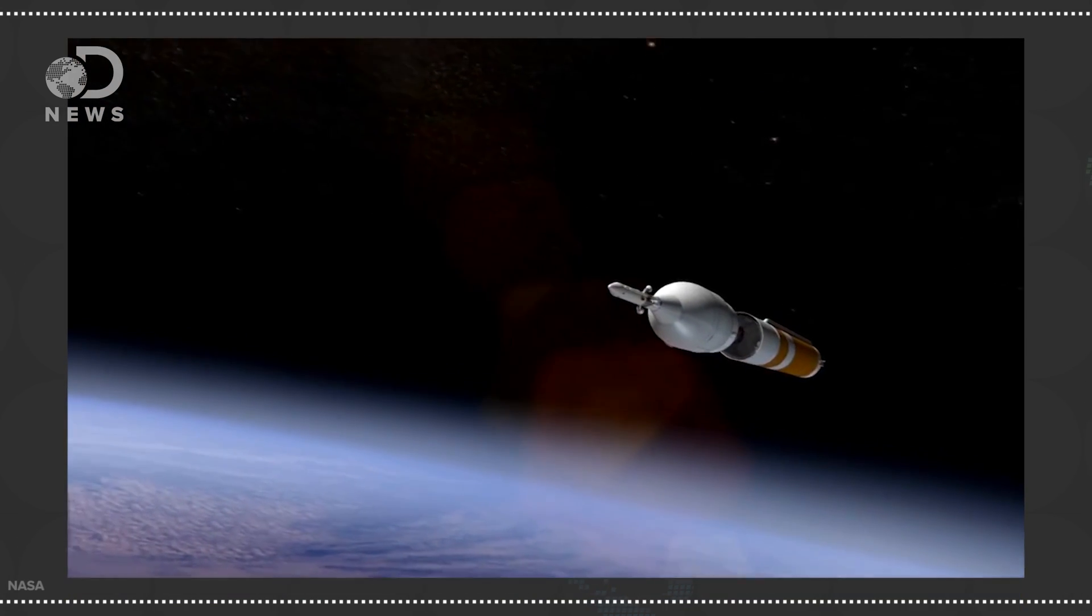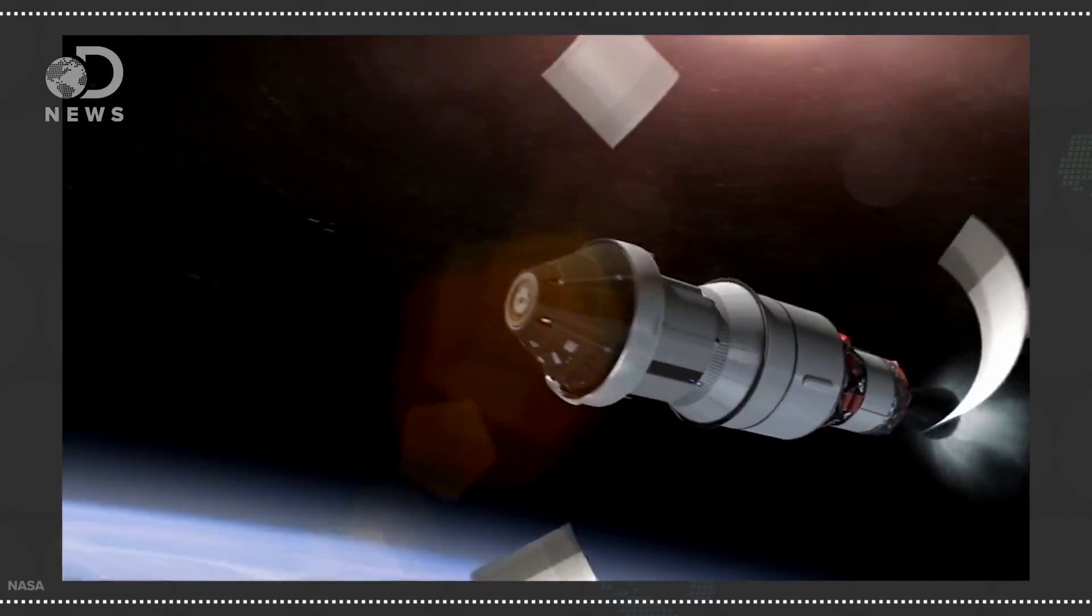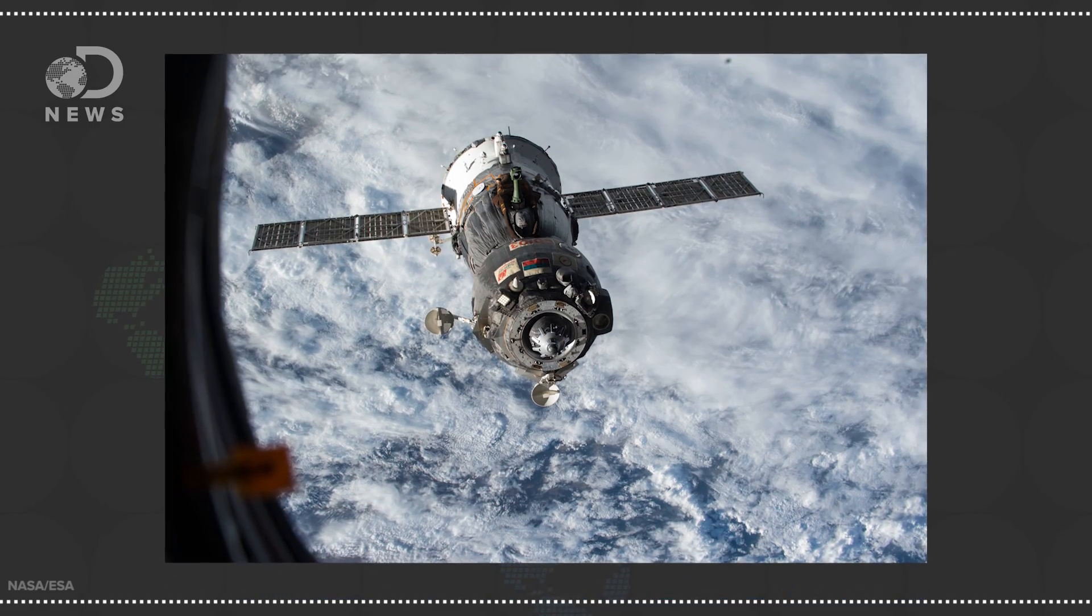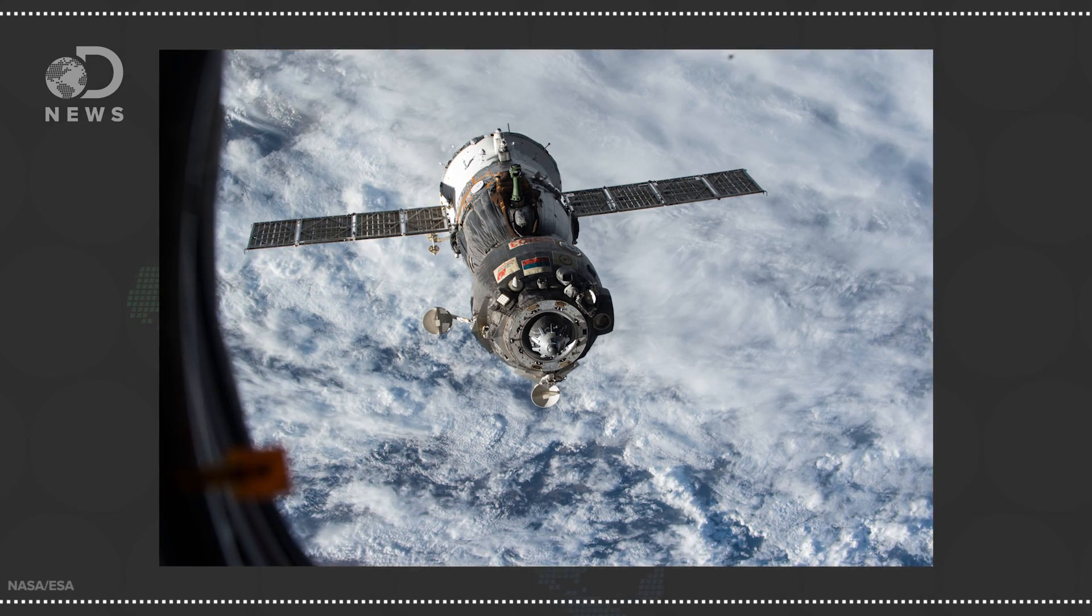But assuming the payload still stays intact, sometimes the rocket just puts it in the wrong place. And that's what happened in August of 2014 with a Russian Soyuz Fregat rocket carrying two of the European Space Agency's Galileo satellites. The rocket worked flawlessly most of the way up there, and then in the last stage it pointed in the wrong direction and shot them off in an orbit that made them useless for their intended purpose. So close.